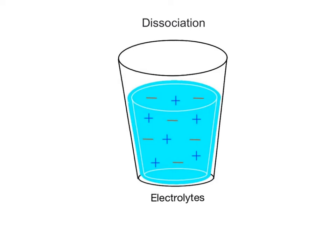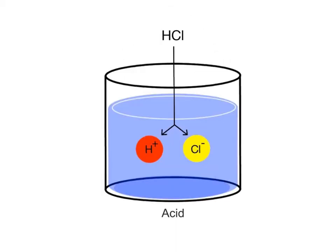We've learned from previous videos that dissociation is when chemical substances separate into positive and negative ions when dissolved in water. An acid is a chemical that dissociates into one or more positively charged hydrogen ions and one or more negatively charged anions.